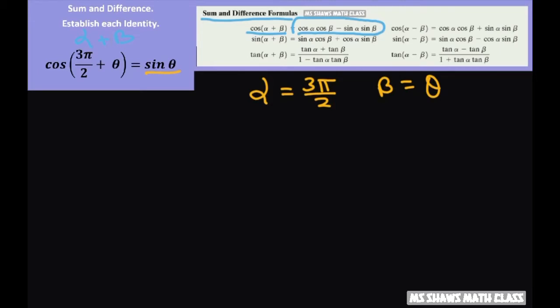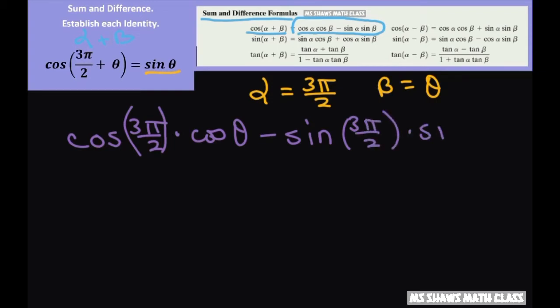So now all we're going to do is expand. We're going to get cosine of 3π divided by 2 times cosine of theta, and then we have minus sine of 3π—let's put these in parentheses—3π divided by 2 times sine of theta. So all I did was substitute in my alpha and my beta.